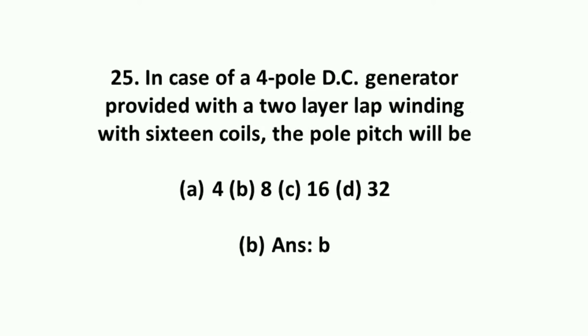In case of a four-pole DC generator provided with a two-layer lap winding with 16 coils, the pole pitch will be 8.